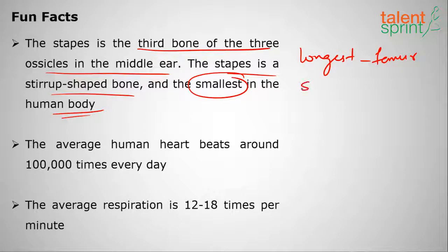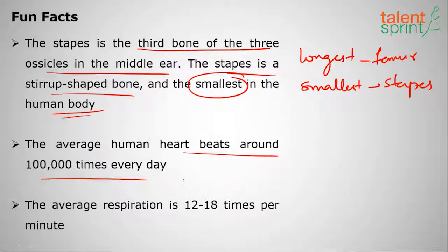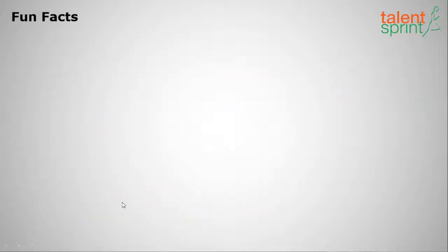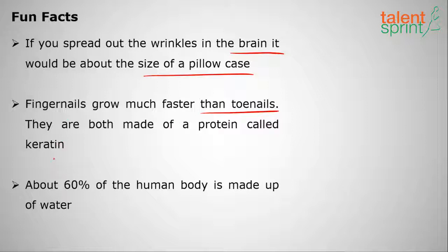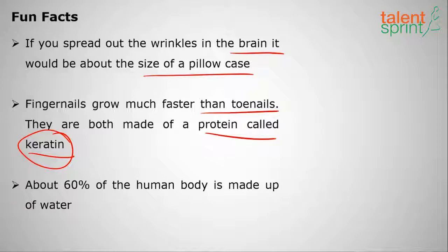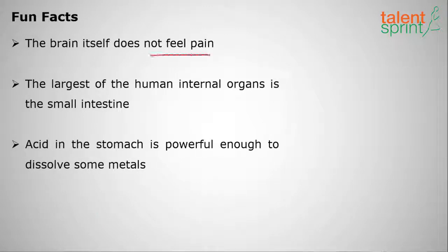The average human heart beats around one lakh (100,000) times per day, and the average respiration rate is around 12 to 18 times per minute. If you spread out the wrinkles in the brain, it would be about the size of a pillowcase. Fingernails grow much faster than toenails, and both are made up of a protein called keratin.